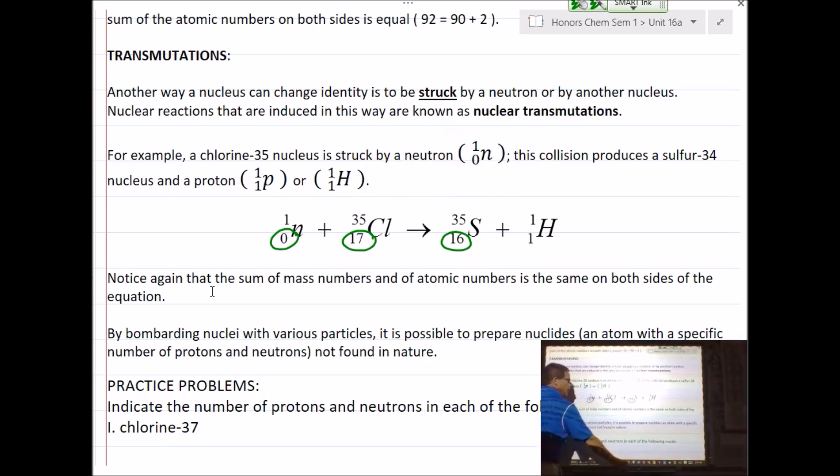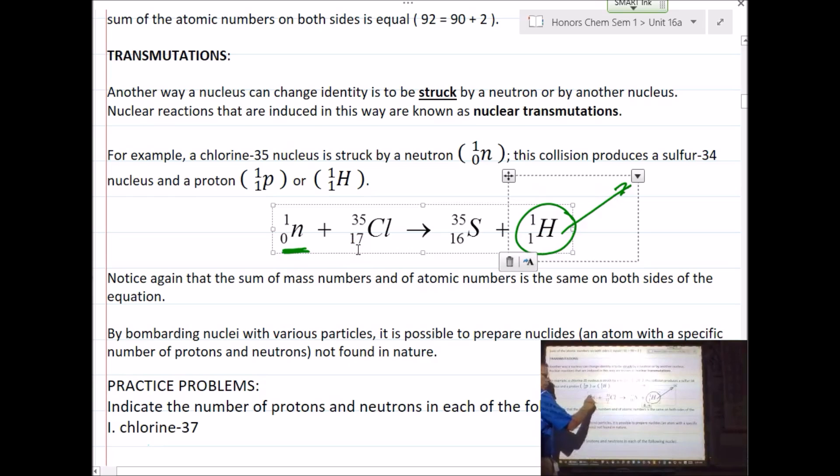Here's an example where a neutron is captured by a chlorine 35 atom, and as that happens, a proton is ejected from the nucleus. Now, I'd have to tell you that that was happening. There's no way that you're going to be able to look at that reaction and go, there's a proton that's ejected whenever a neutron's captured. It depends on the situation. But, if I tell you that a proton's been ejected from the nucleus, hopefully you're going to be able to write this out and be able to write down the correct values for that. Keep in mind that the numbers need to add up to the same on both sides there.